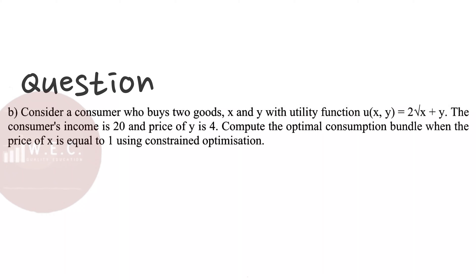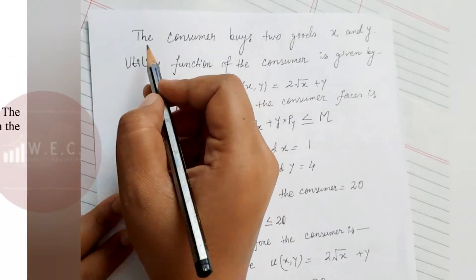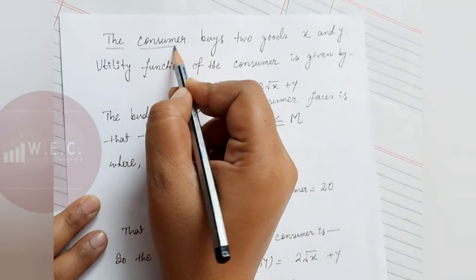This is a consumer behavior constraint optimization problem. A consumer buys two goods x and y. The utility function, income, price of good y and x are all given. We have to calculate the optimal consumption bundle — the bundle for which the consumer's utility is maximized.